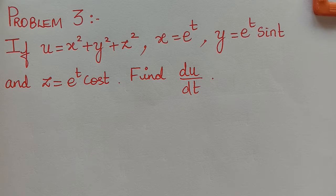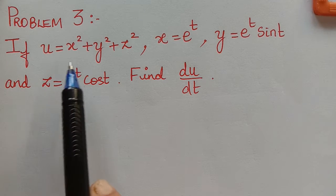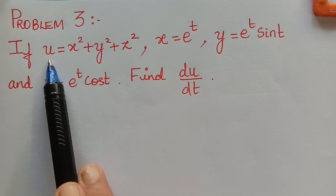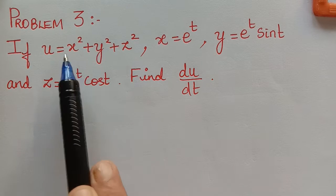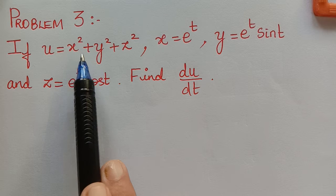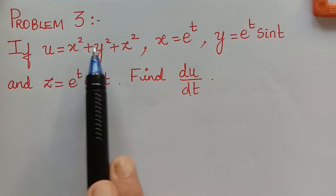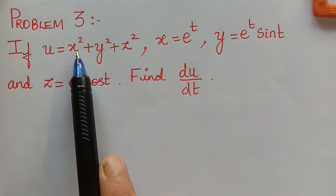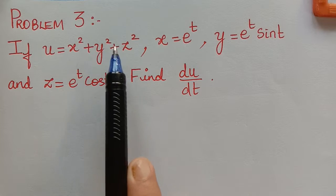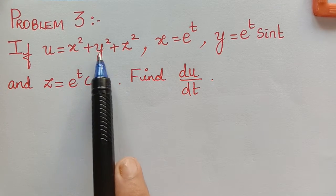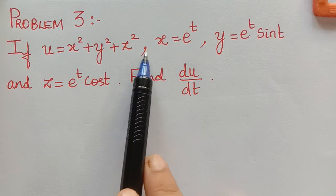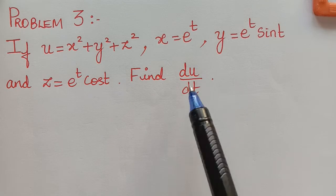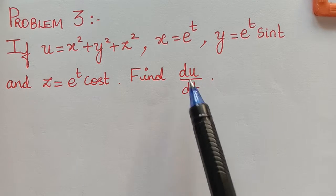Dear students, under the topic total differential coefficient, here we have problem 3. The differential function u is given in terms of 3 variables. In our previous problems, we dealt with a differential function given in terms of 2 variables x and y. Now here in this problem, the differential function u is given in terms of 3 variables x, y and z, and the variables x, y, z are given in terms of a differential function with respect to the variable t. They are asking us to find the total differential coefficient du by dt.